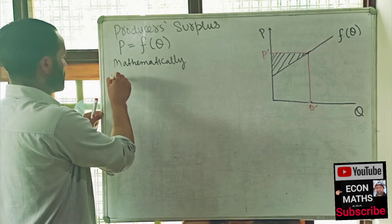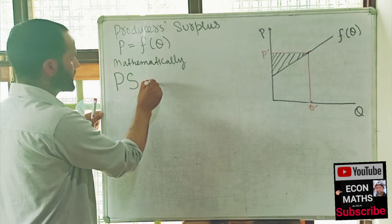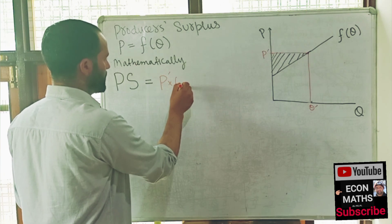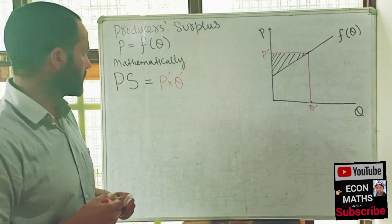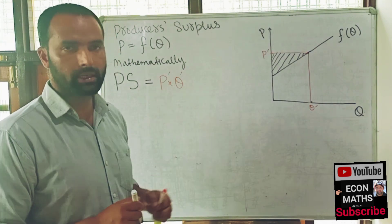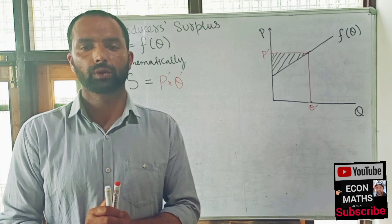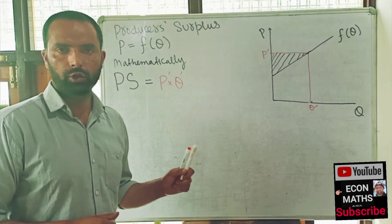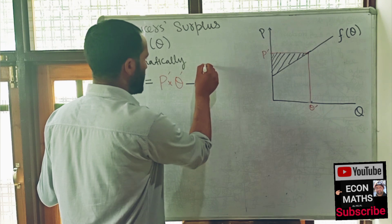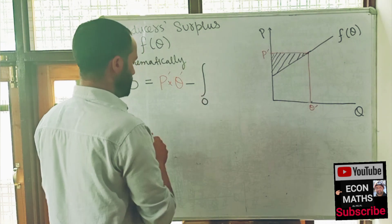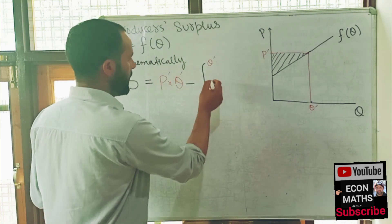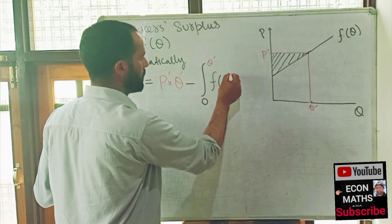Mathematically, the producer surplus PS is given as P' times Q' — where P' is the equilibrium price that producers actually receive and Q' is the equilibrium quantity — minus the definite integral from zero to Q' of the supply function F(Q) dQ.